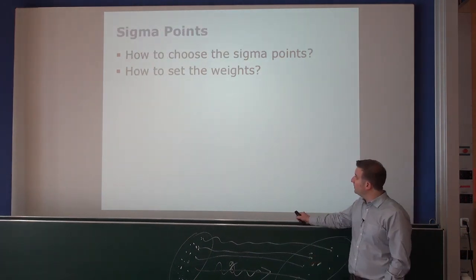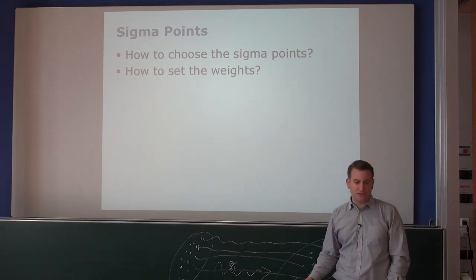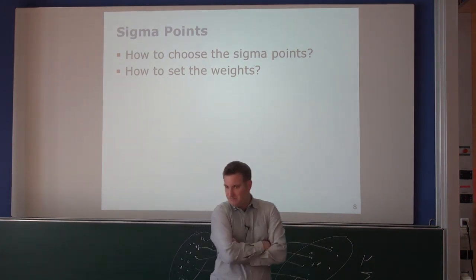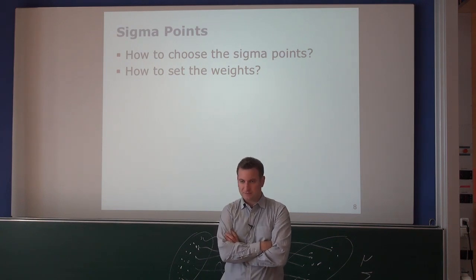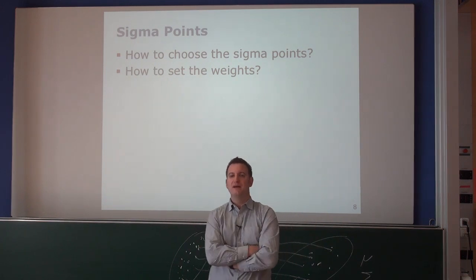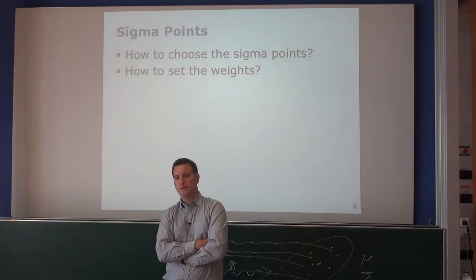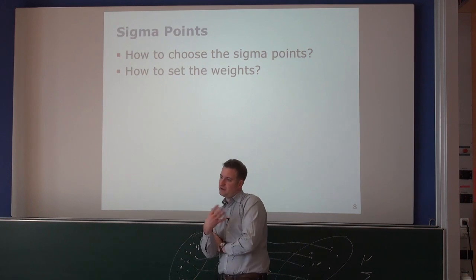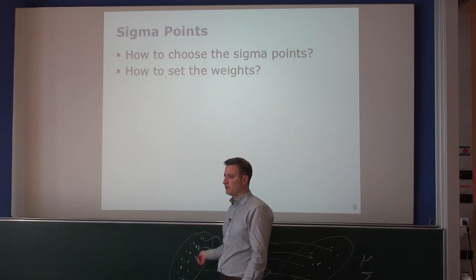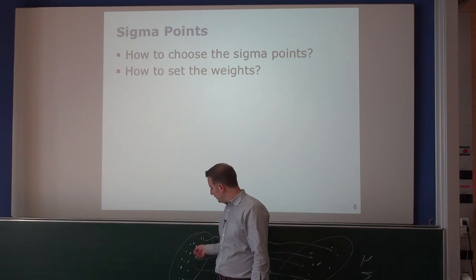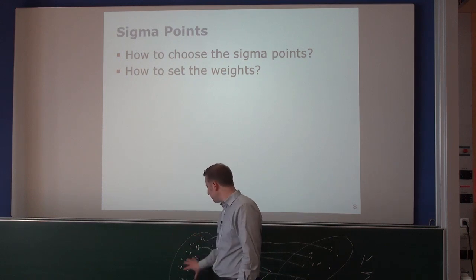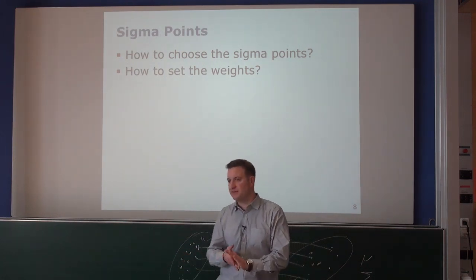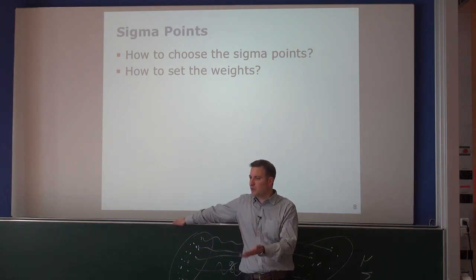The key question is: how should we choose our sigma points and how should we choose our weights? What are the constraints? We need a strategy for generating those samples and weights. The points should be drawn in a deterministic way, relative to the mean and covariance, and the closer they are to the center the better they approximate the largest portion of probability mass.